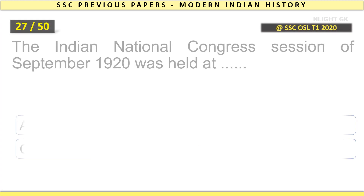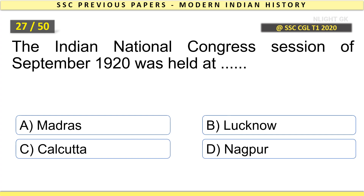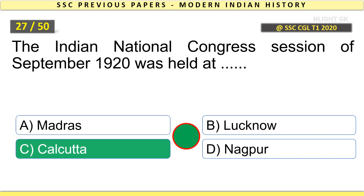The Indian National Congress session of September 1920 was held at Calcutta.